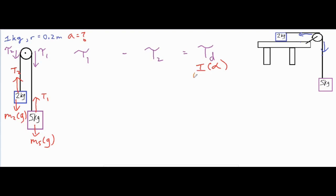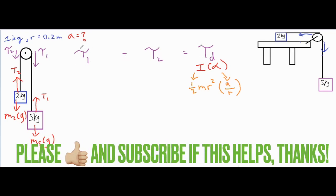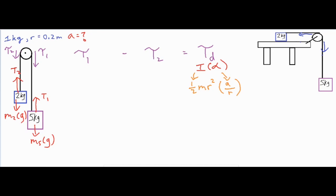We're going to make one more substitution: the rotational inertia I for a disc is one half m·r² and the angular acceleration α can also be expressed as a over r. We make these substitutions because we have too many unknown variables. After substituting, one of the r's cancels and we have one half·m_d·r·a on this side, where the mass of the disc is one kilogram, the radius r is 0.2 meters, and a is the linear acceleration we're solving for.